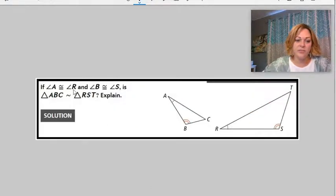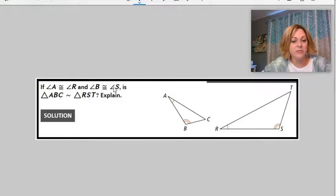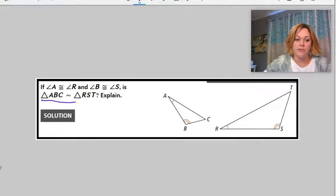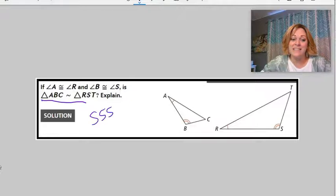Lesson 7-3. If these two angles are congruent and those two angles are congruent, are these triangles similar? If you are ever trying to show or prove triangles are similar, you only have three choices. Your choices are side-side-side similarity, side-angle-side similarity, or angle-angle similarity.